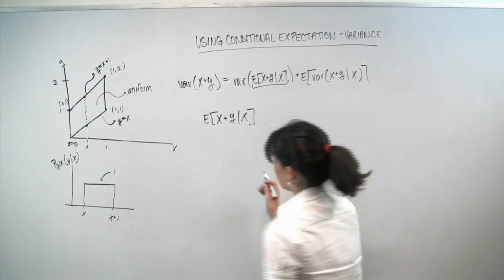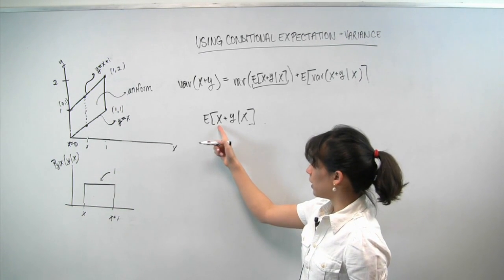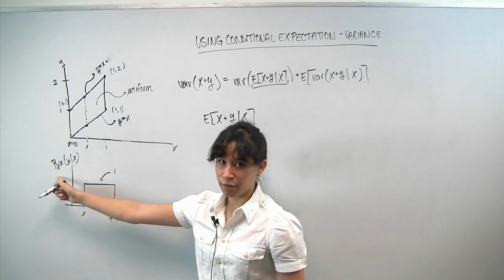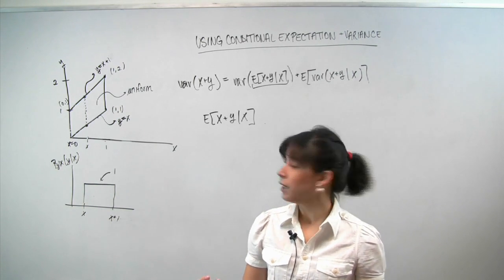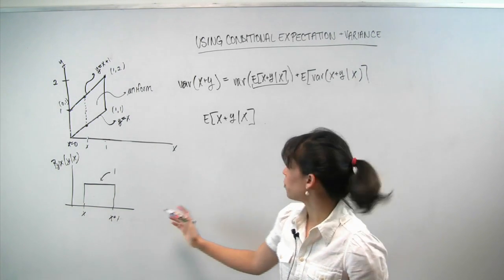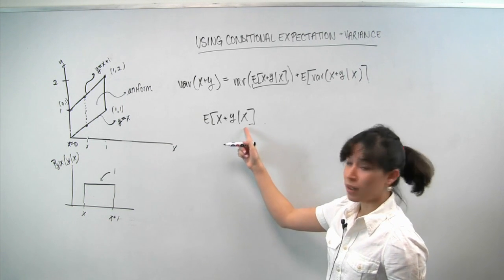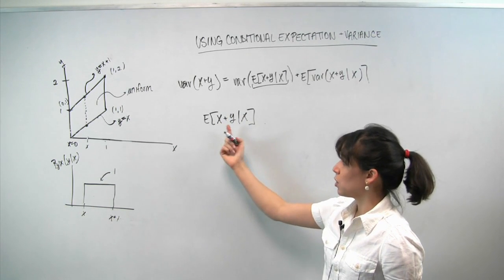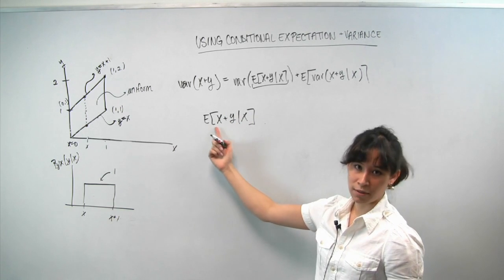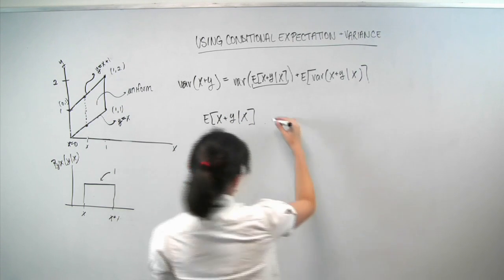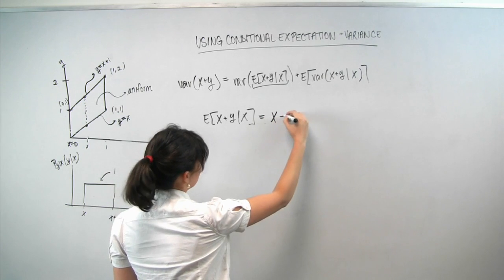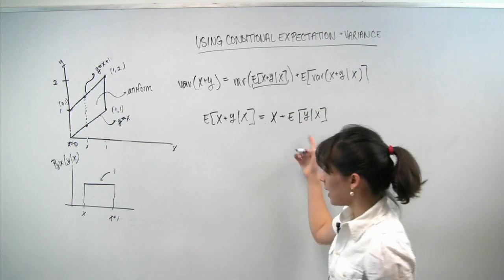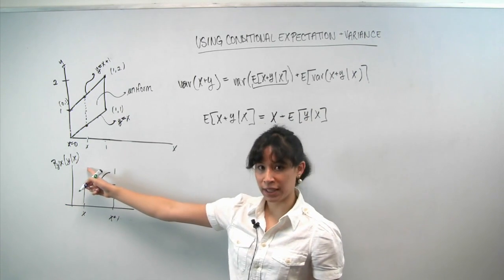Now you might be concerned because we're trying to compute the expectation of x plus y. And this is the conditional PDF of y, not of the random variable x plus y. But I claim that we're OK, this is still useful, because if we're conditioning on x, this x just acts as a constant. It's not really going to change anything except shift the expectation of y by an amount of x. So what I'm saying in math terms is that this is actually just x plus the expectation of y given x. And now our conditional PDF comes into play.